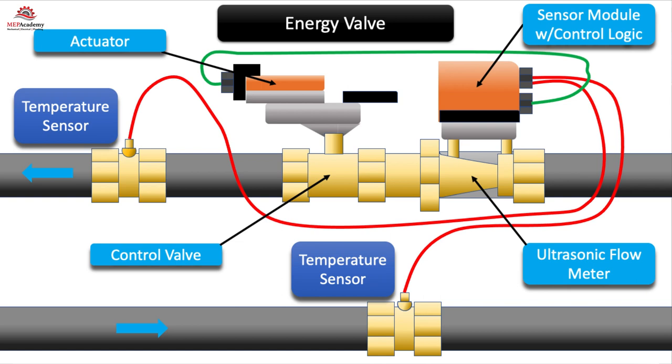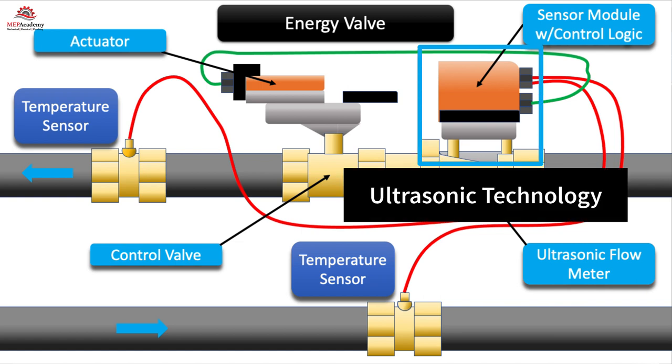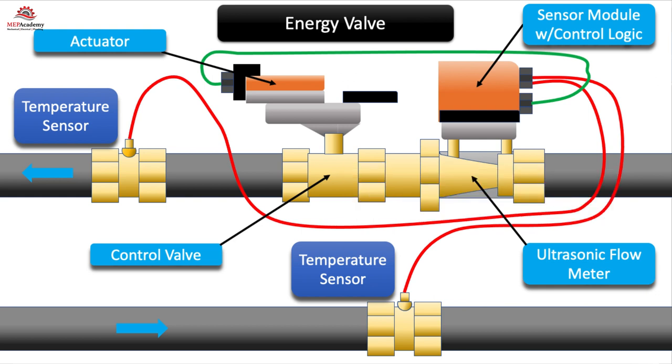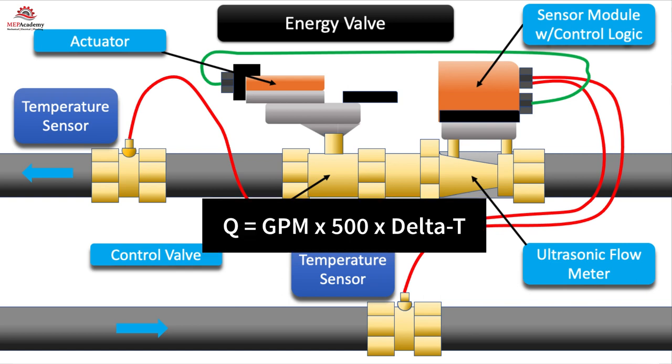By measuring the temperature of the supply and return system water, whether chilled water or heating hot water, the onboard software can optimize flow. Using ultrasonic technology, the energy valve measures the flow through the valve. With the flow and temperature of the supply water circulating through the valve, calculating the total energy is a simple formula. Q equals 500 times GPM times delta T.